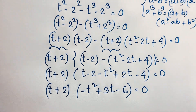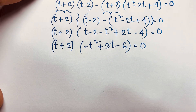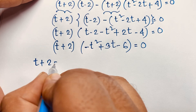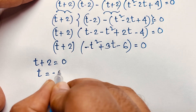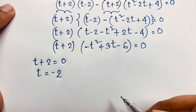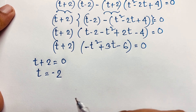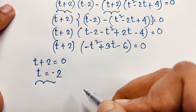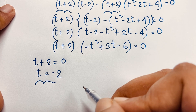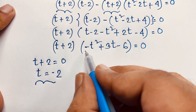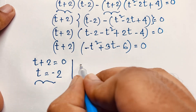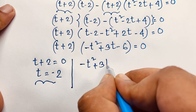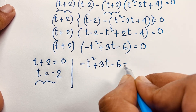So we find two cases. Our first case: t plus 2 is equal to 0, which gives t is equal to minus 2. So our real solution is t is equal to negative 2. This is a final answer from the first factor. But we also have a quadratic equation: negative t squared plus 3t minus 6 is equal to 0.